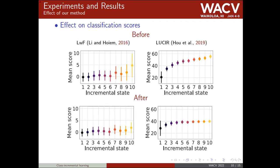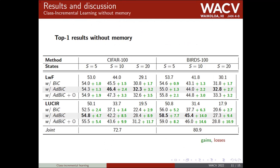After applying TransIL, the classification scores are more balanced between states. Results show that our method provides improvements of up to 14 points in terms of top-one accuracy on the Birds dataset. The best results are obtained when using LUCERE as a backbone method. The gap with Oracle selection is small but could be improved using a more sophisticated reference dataset selection. The gap with joint training is still large, and more effort should be dedicated to class incremental learning.